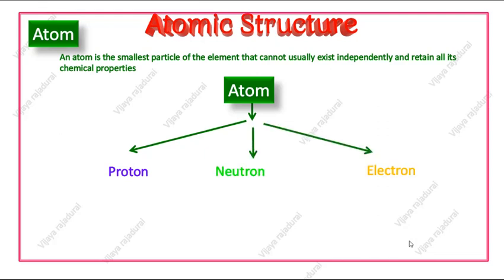Proton is the positively charged particle. Neutron is the chargeless particle. There is no charge in neutron, that is charge is zero. And electron is the negatively charged particle.